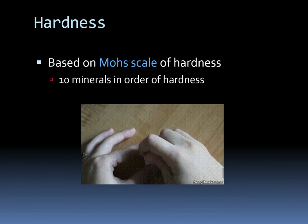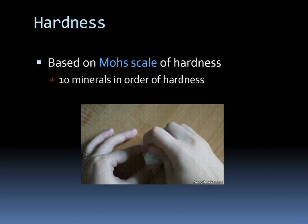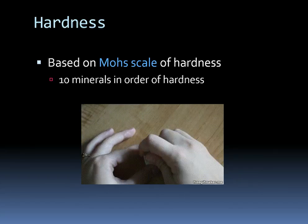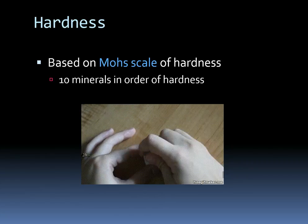Now let's look at hardness. Rather than how tough it is against breaking, hardness is the relative ability to resist scratching. To test it, you take one mineral and rub it on another — if it scratches, the mineral doing the scratching is harder. These are based on the Mohs scale of hardness, developed in 1812 by German mineralogist Friedrich Mohs, who scratched common minerals against each other and put them in order from hardest to softest.